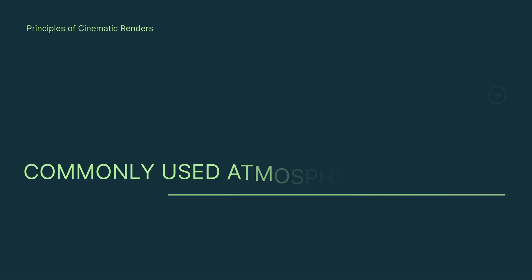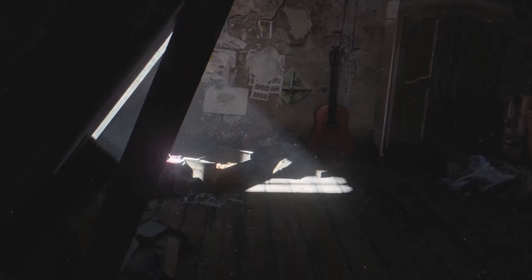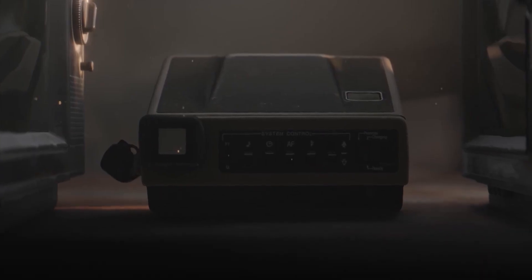Let's talk about some commonly used atmospheric elements. Number 1: Dust. Dust can add a touch of realism and create a sense of depth. Think about a sunlit room where the particles are gently streaming through the air — some in focus, some out of focus. It adds a magical quality, making the scenes come alive with a sense of micro-movement.